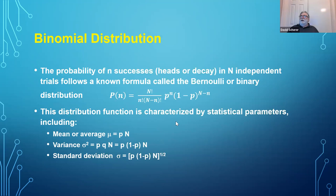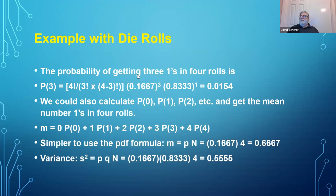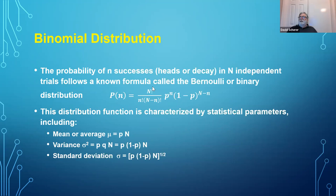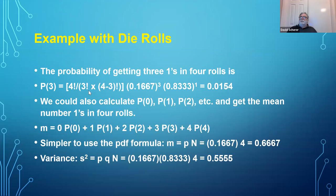Let's use the Bernoulli distribution for rolling a die and figure out the probability of getting three ones in four rolls. The probability is the number of rolls divided by the factorials of successes and failures times the probability of success cubed times (1 minus p) to the power of the number of failures. The probability of getting exactly three ones on four rolls is about one and a half percent.